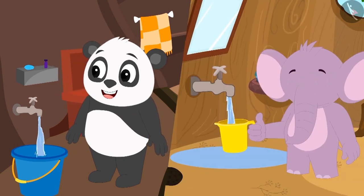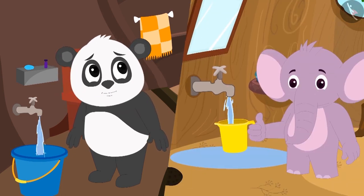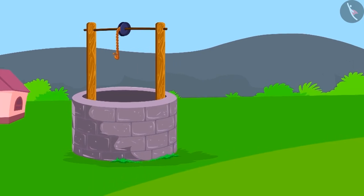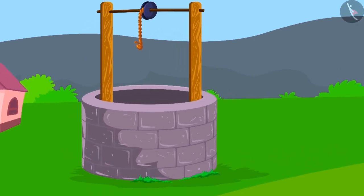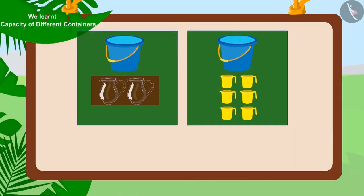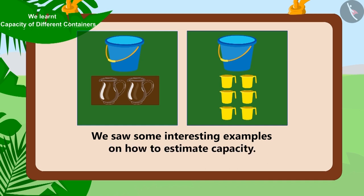Everyone's buckets were filled and they returned to their respective homes. The next day, water started coming to the village and all the villagers were relieved from going to the well. In this video, we saw some interesting examples of how to estimate capacity. In the next video, we will see some misconceptions related to this topic.